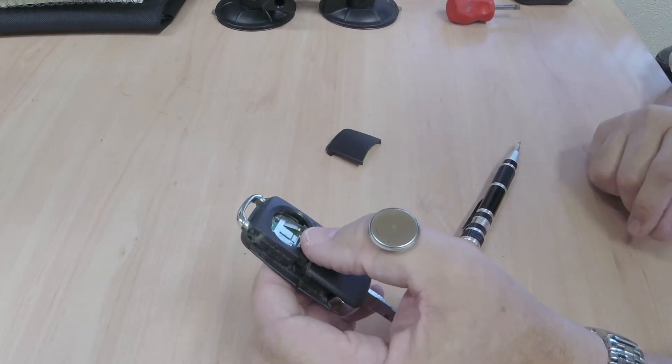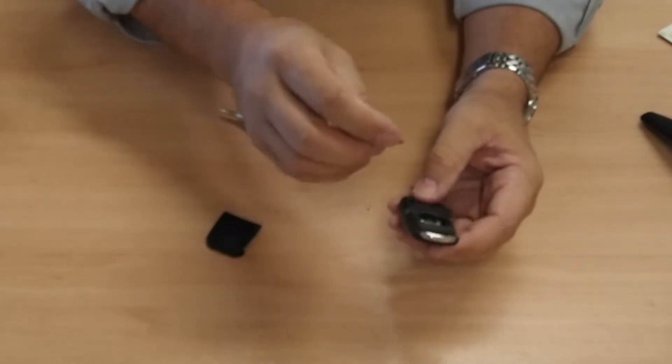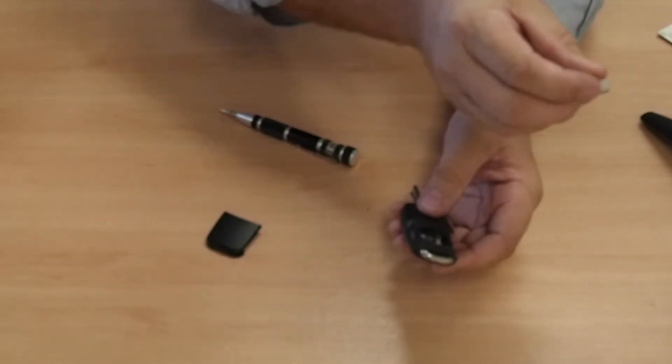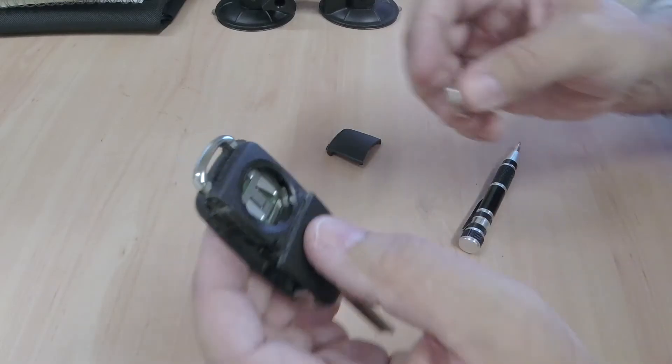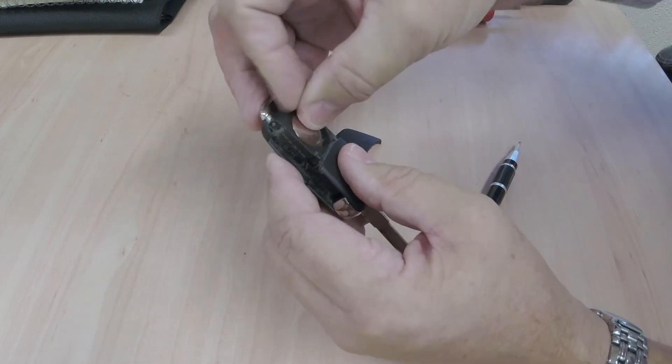So there you go, the 2032 with the plus side facing towards you. That's it, tuck it into those contacts there and press it so that it will hold securely.